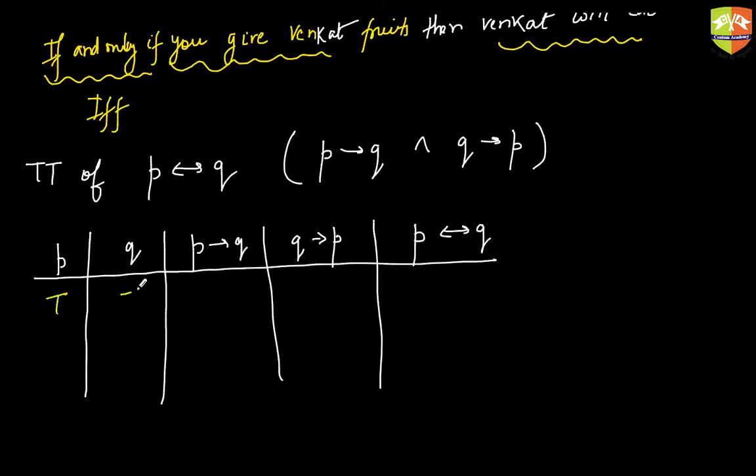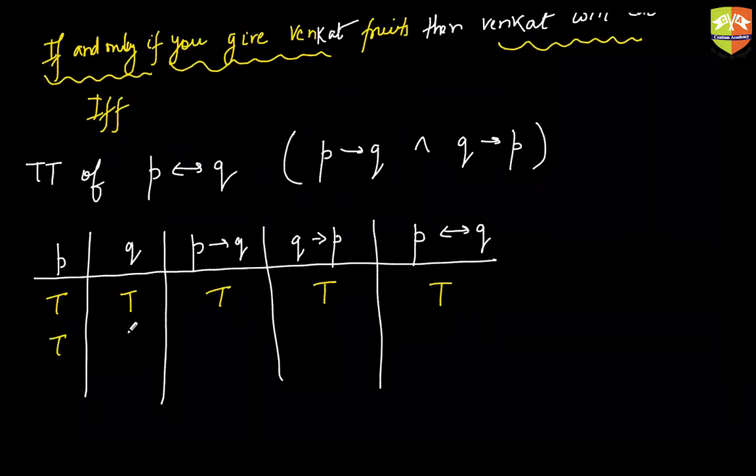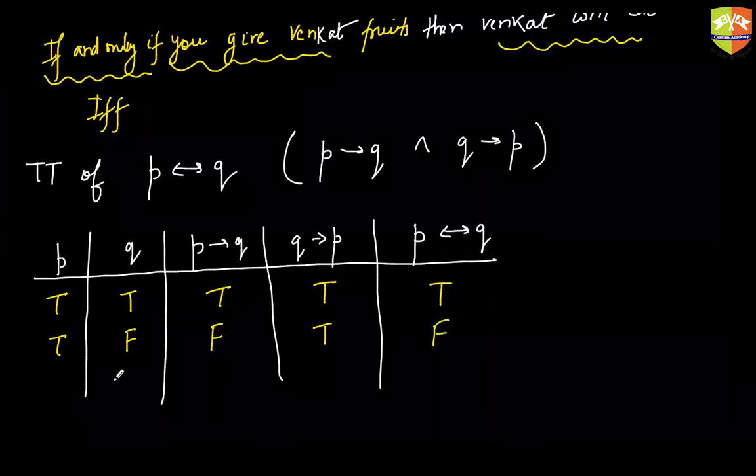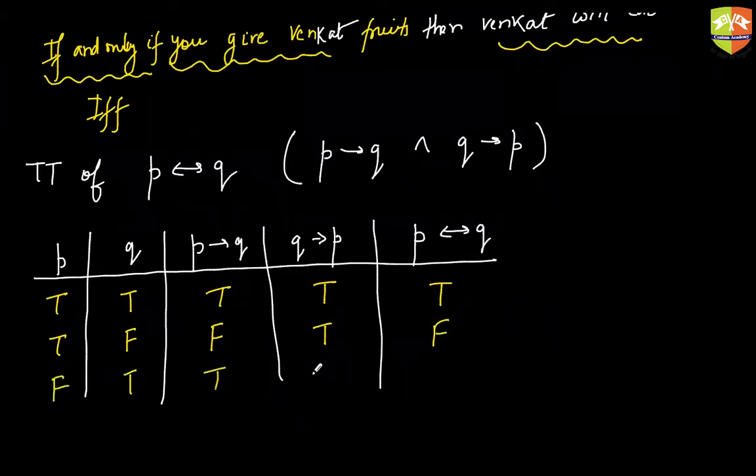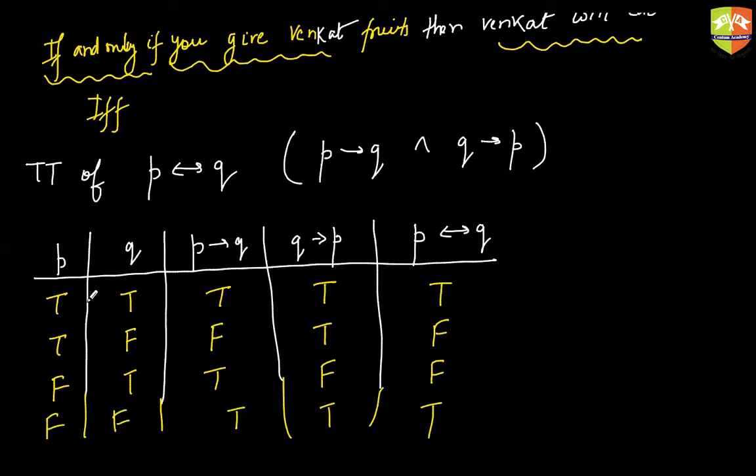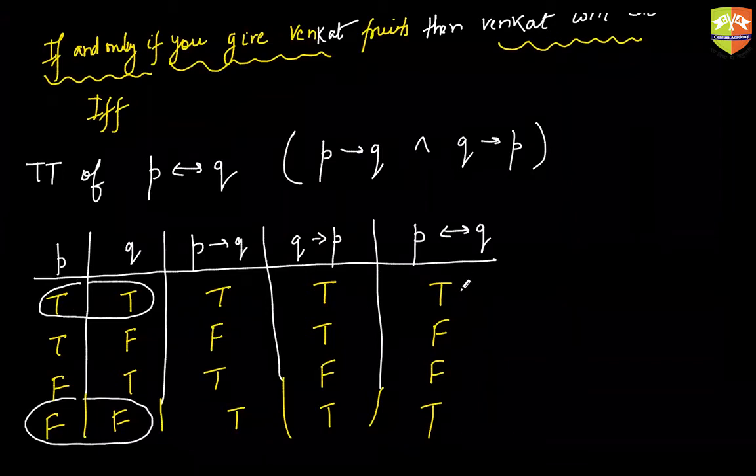True true, this is true, this is also true. If both have to be true or both have to be false. If this is true this is false, conjunction of these two will be false. False true, conjunction will be false. And finally when you have false false, this will be true, this will also be true, and conjunction of two true is also true.